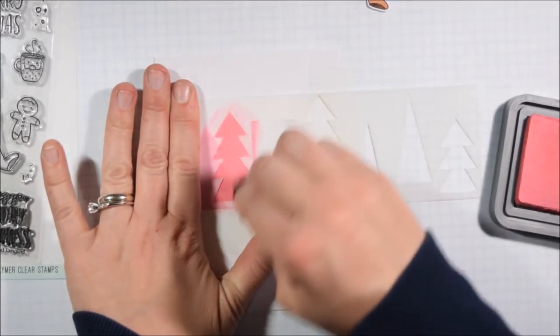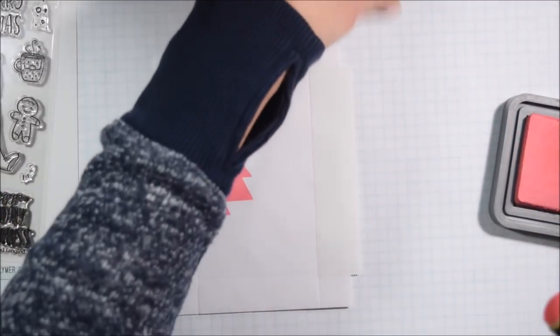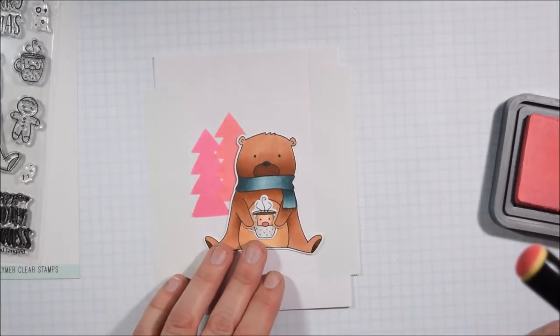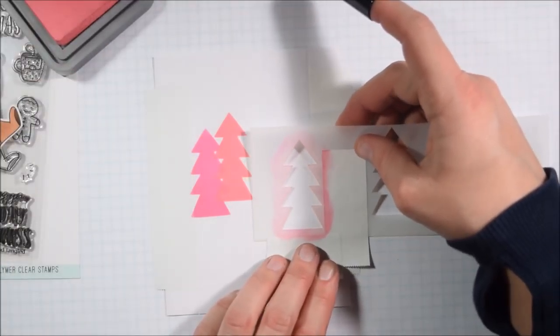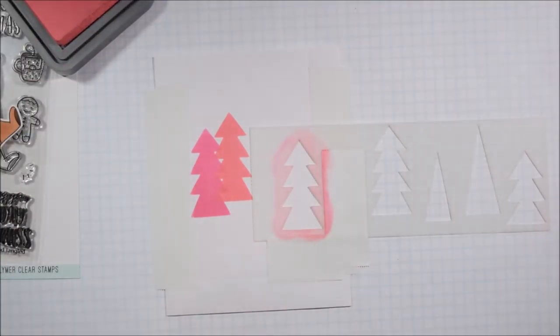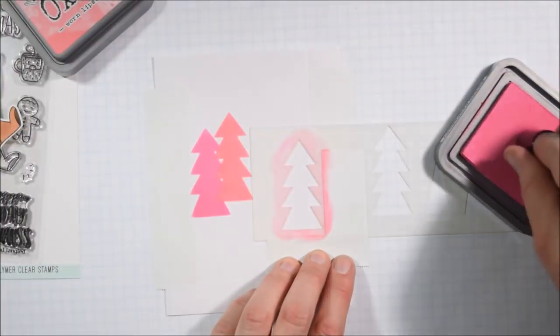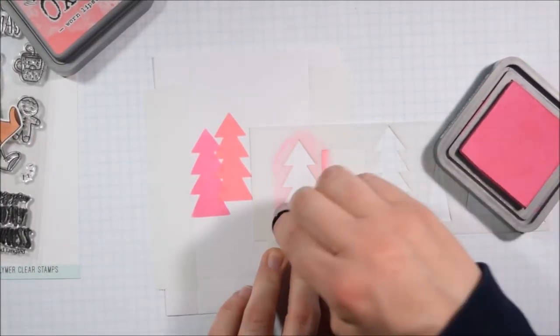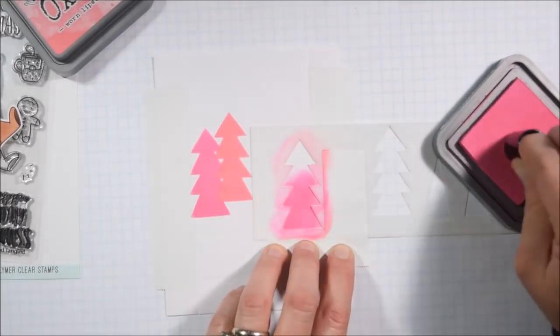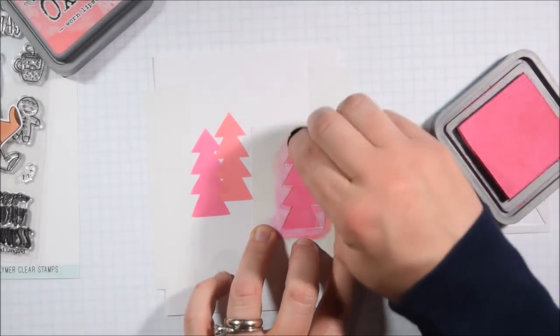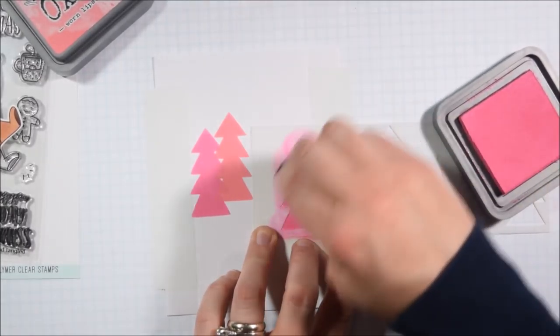If you do get a smudge of ink where you don't want it, the distress oxide ink is a lot easier to pick up than the traditional distress ink. So I can go in with my Tombow Mono Sand Eraser and erase part of the distress oxide ink just so much easier than if I were to use the regular distress ink. And I'm going to create a group of three trees, things tend to look better in odds and it gets a nice frame around my bear. As you can see I keep pausing and I put the bear into the scene just to see how I like it.